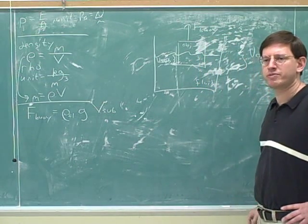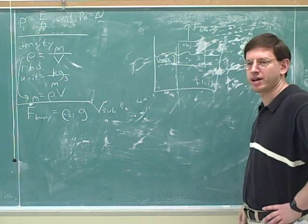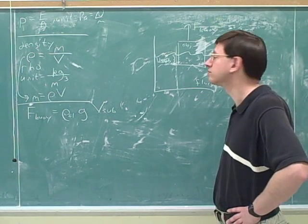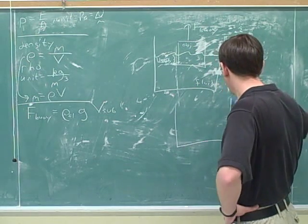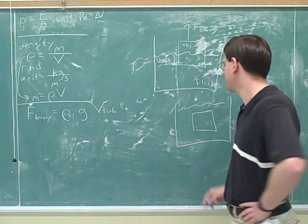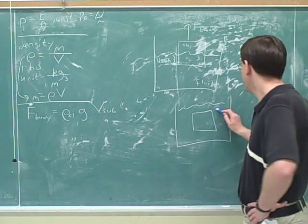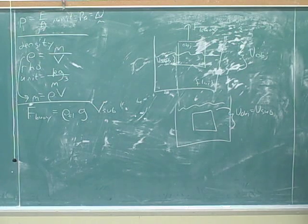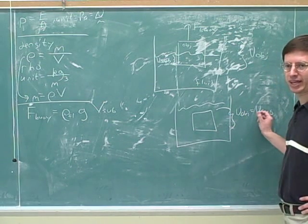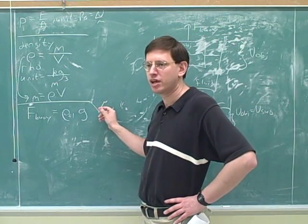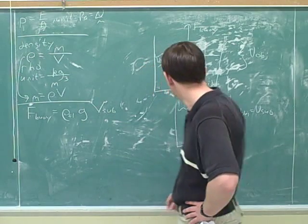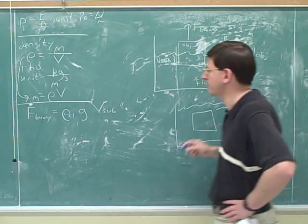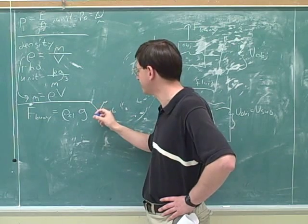Could V_sub ever equal V_object? That would only happen if the entire object is submerged — the total volume of the object is identical to the submerged portion because the whole thing is under the fluid. In that case, you can plug in the volume of the object to find the buoyant force. You can only do that when the total object is submerged. If only a portion is submerged, the buoyant force depends only on the volume of that submerged portion, not the total volume of the object.